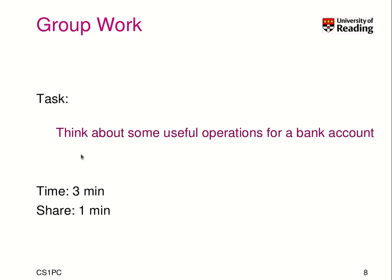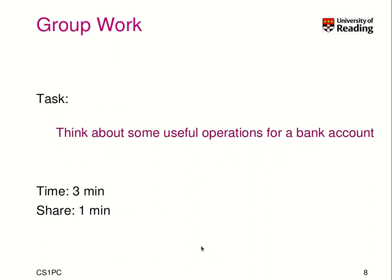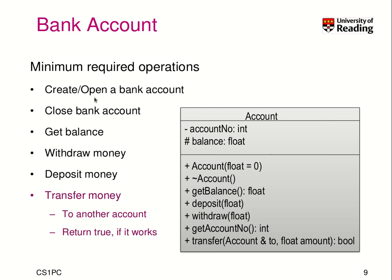Think about it for three minutes. Try to write down, similarly in UML notation, some methods that might be useful. Pause the video now. Welcome back. Here are some ideas — some operations that we need. We certainly need to create and open a bank account, and we need to be able to close a bank account. You may want to get the balance, the current balance. The creation and deletion can probably be done with the destructor and the constructor.